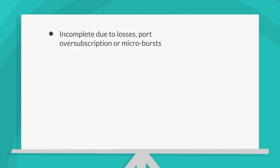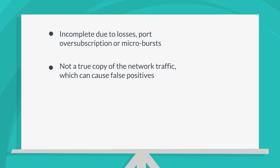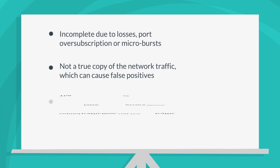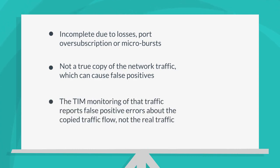Traffic can be incomplete due to losses happening on the copied traffic, port over-subscription, or microbursts. In this situation, the TIM is not detecting and monitoring a true copy of the network traffic, which can cause false positives. Losing a few packets results in a similar version of the network traffic, not a true copy. When the data-providing infrastructure causes data losses, the TIM monitoring of that traffic reports false positive errors about the copied traffic flow, not the real traffic.